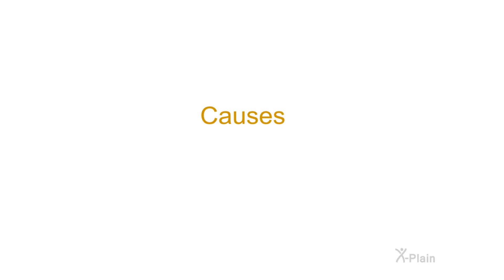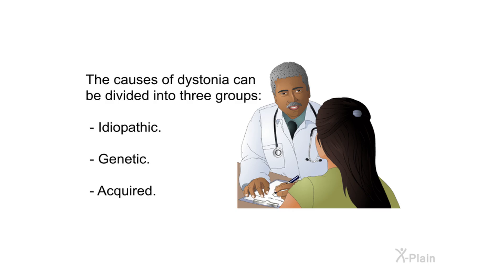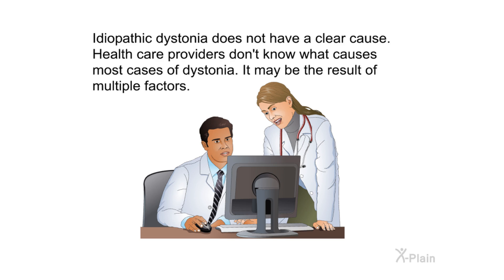The causes of dystonia can be divided into three groups: idiopathic, genetic, and acquired. Idiopathic dystonia does not have a clear cause — health care providers don't know what causes most cases, and it may be the result of multiple factors.